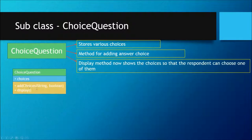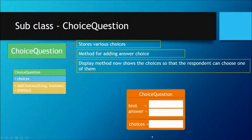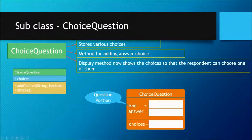The add choices method gives you a choice and tells whether it is correct or not. The display method will display the question and the choices together. The ChoiceQuestion will have the question text and the correct answer — both are instance fields belonging to the Question superclass. The only new thing in ChoiceQuestion is going to be the different choices you provide for the question.